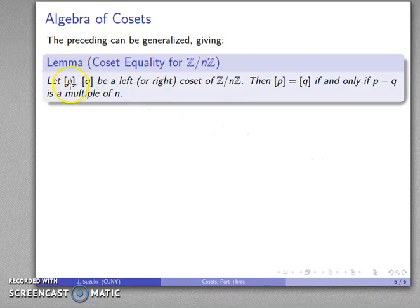And so that gives me the following nice lemma, which is that if I know that P and Q are left or right cosets of Z mod nZ, then I know that they are equal if and only if their difference is a multiple of whatever n is.